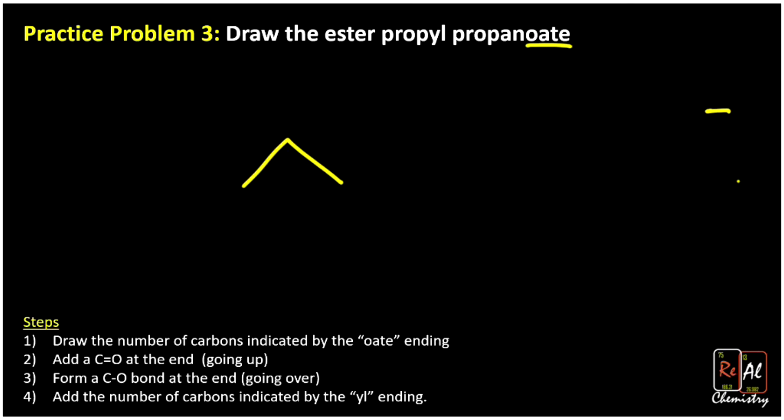And then it says add a C=O double bond, and we're going to draw that going up, which might look a little weird. That's okay. We could draw it going down. That would be fine too. So that has three carbons and a C=O bond. And now it says form a C-O single bond. So we're just going to go over here to an oxygen.